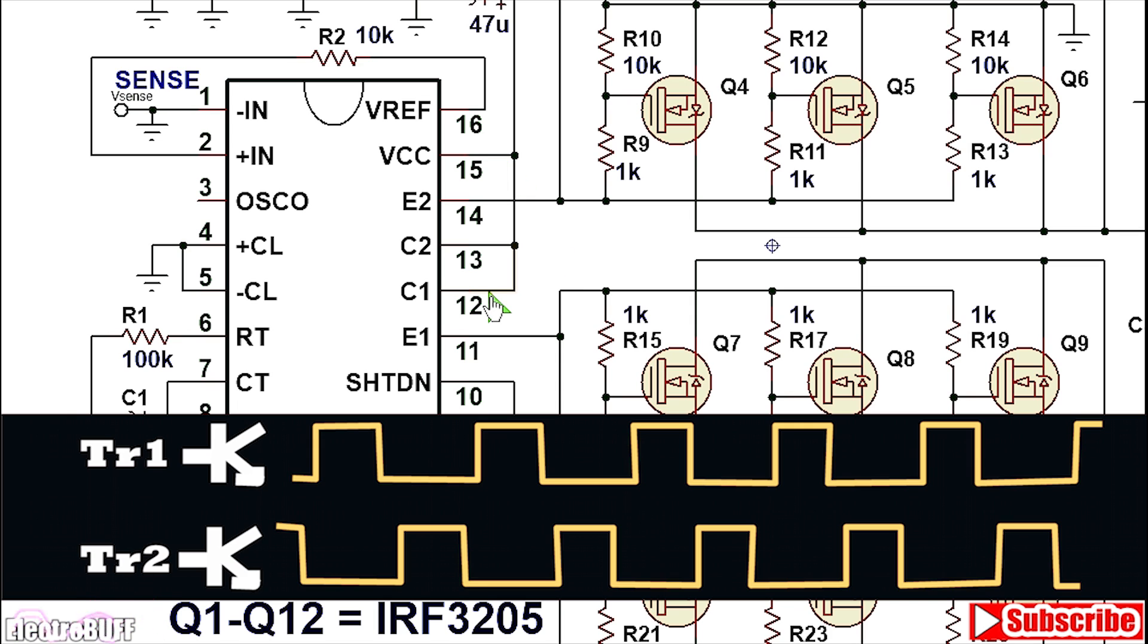You need to pull up the open collectors pin 12 and 13 to VCC as shown. The MOSFET gates are being driven by the outputs at the emitters pin 11 and 14. Because you are dealing with low frequencies you do not need a dedicated gate driver IC. The SG3524 can deliver sufficient current to switch the MOSFETs at 65 hertz without a problem.